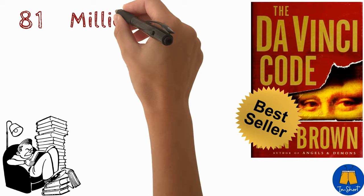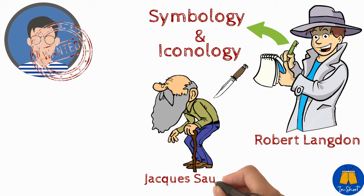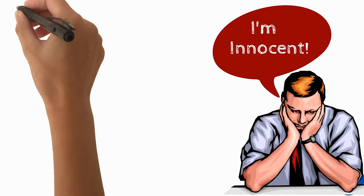Written by Dan Brown in 2003, it features the protagonist Robert Langdon, a professor of symbology and iconology, who finds himself the prime suspect of the murder of Jacques Saunière, the curator of the Louvre. He seeks to prove his innocence with the help of Sophie Nouveau, Saunière's granddaughter.